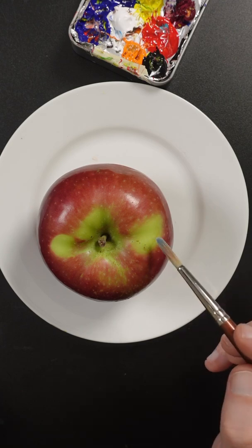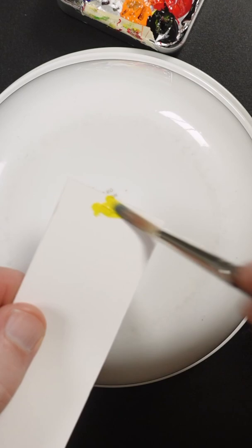I'm going to try and match the green part of this apple from memory, so I'll just cover this up. And I'll start with Hansa Yellow Opaque.